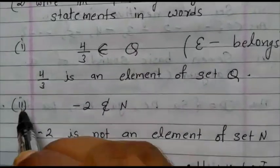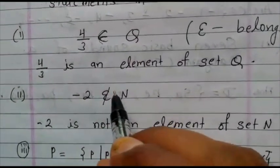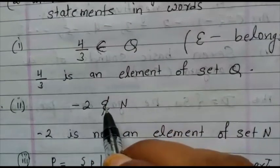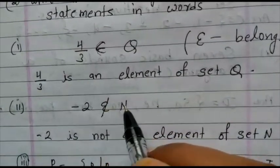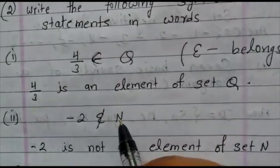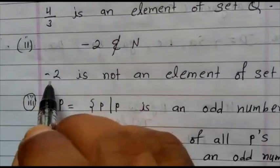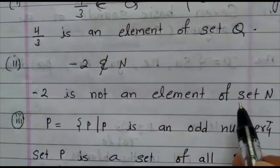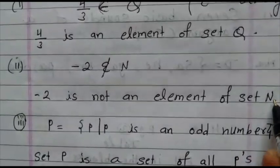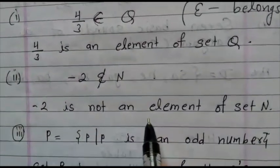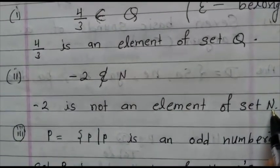Now come to the second question. Minus 2, here is a belongs sign with a cross. That means does not belong. N means natural number. How to write the answer? Minus 2 is not an element of set N.